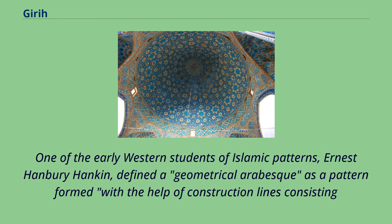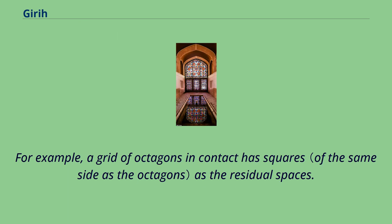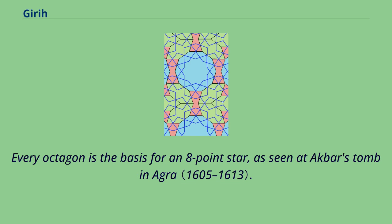One of the early Western students of Islamic patterns, Ernest Hanbury Hankin, defined a geometrical arabesque as a pattern formed with the help of construction lines consisting of polygons in contact. He observed that many different combinations of polygons can be used as long as the residual spaces between the polygons are reasonably symmetrical. For example, a grid of octagons in contact has squares as the residual spaces, and every octagon is the basis for an 8-point star, as seen at Akbar's tomb in Agra.